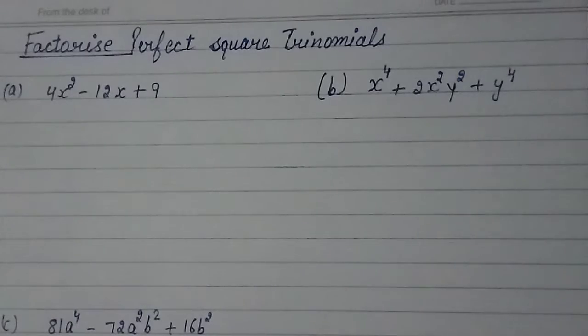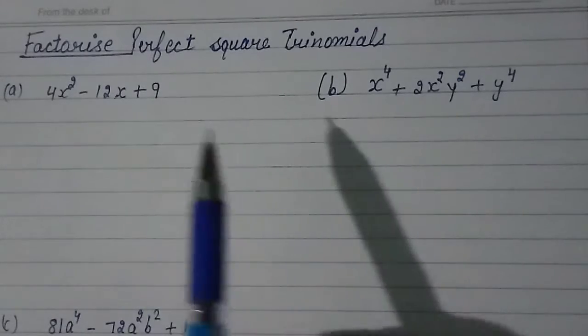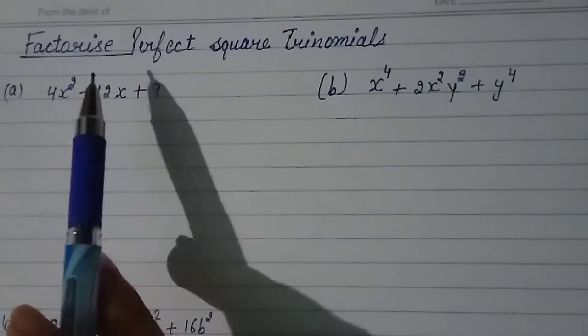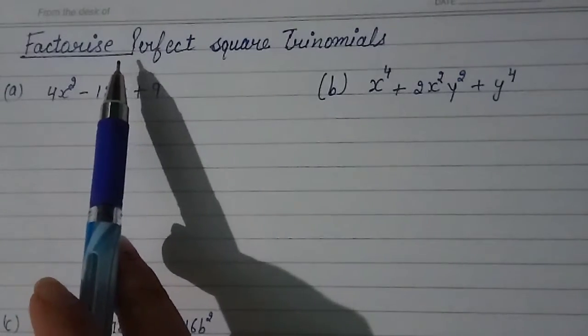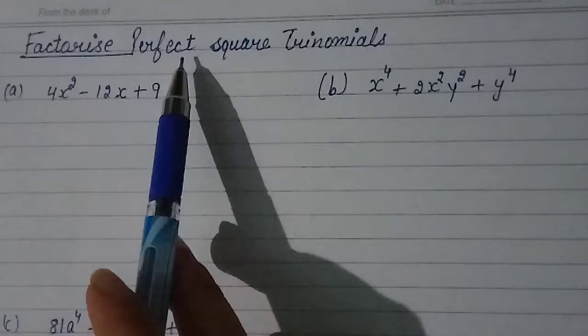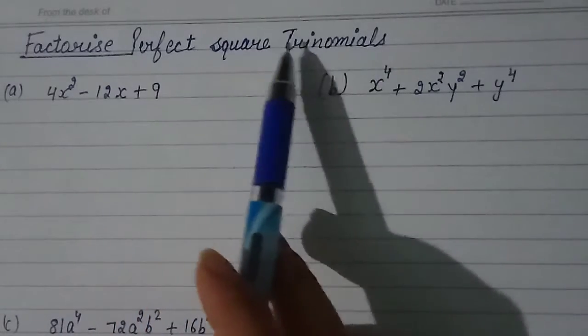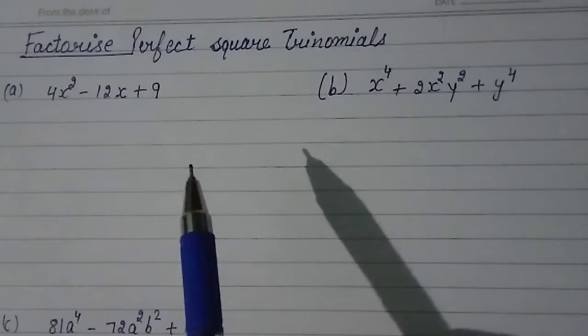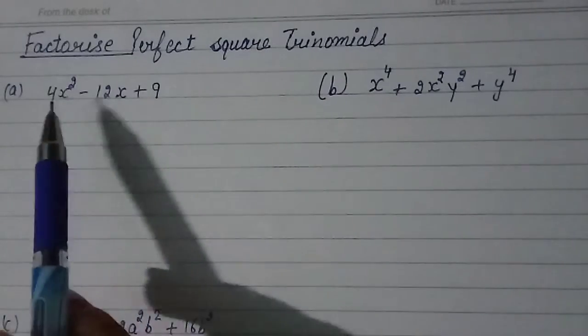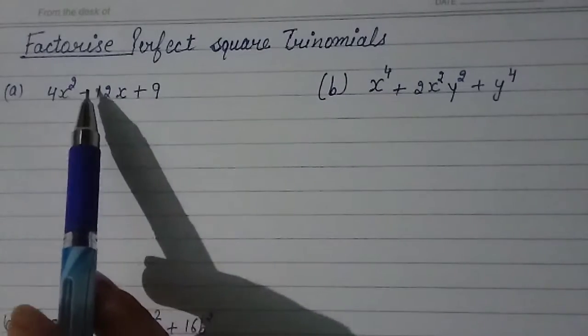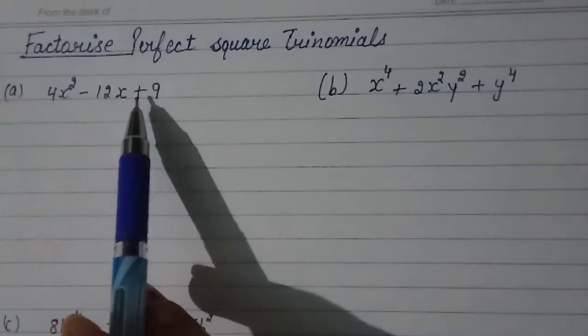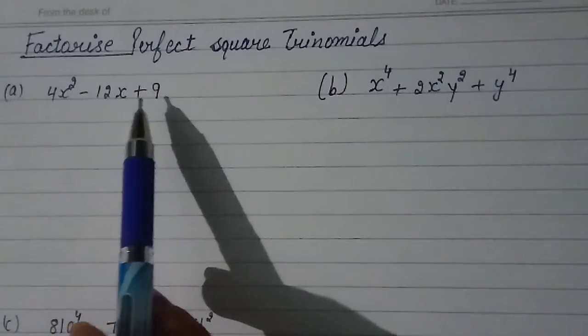I hope you all are doing well. Today we will see how to factorize a perfect square into trinomials. You have been given 4x squared minus 12x plus 9.